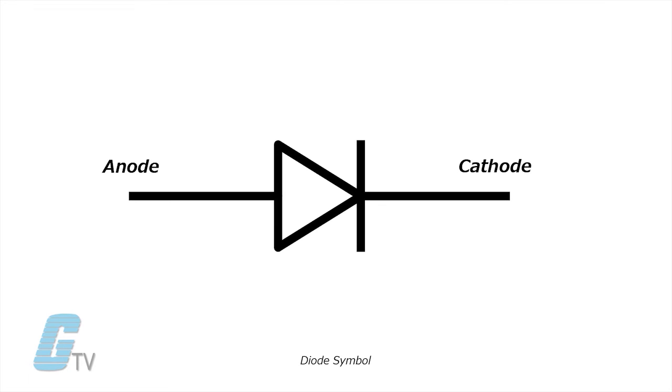Looking at the electrical diagram, the diode symbol resembles a triangle pointing in one direction, usually towards the cathode, and a line crossing the tip of it.